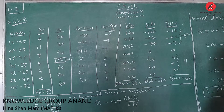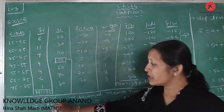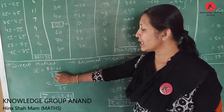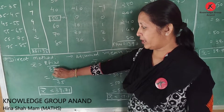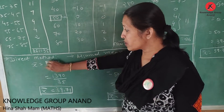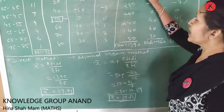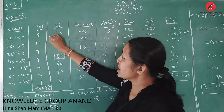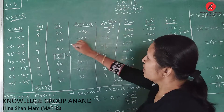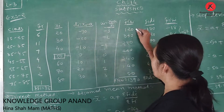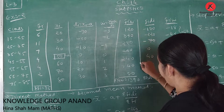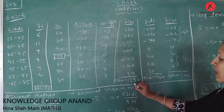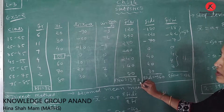Using the direct method first, the formula is x̄ = Σfi·xi / Σfi. We calculate fi × xi: 6 × 20 = 120, then 11 × 30 = 330, and so on. Σfi·xi is computed for all intervals.